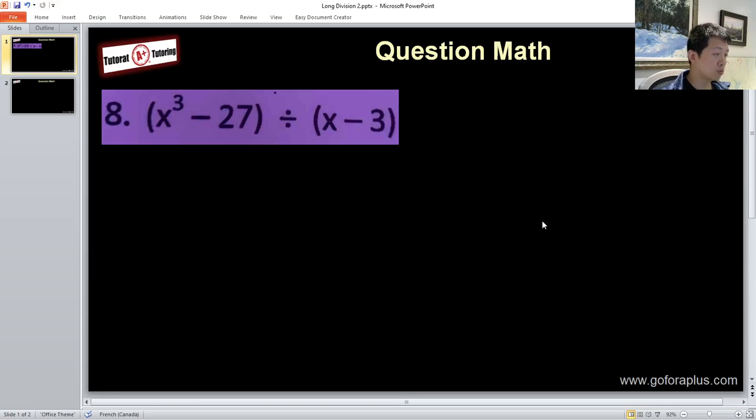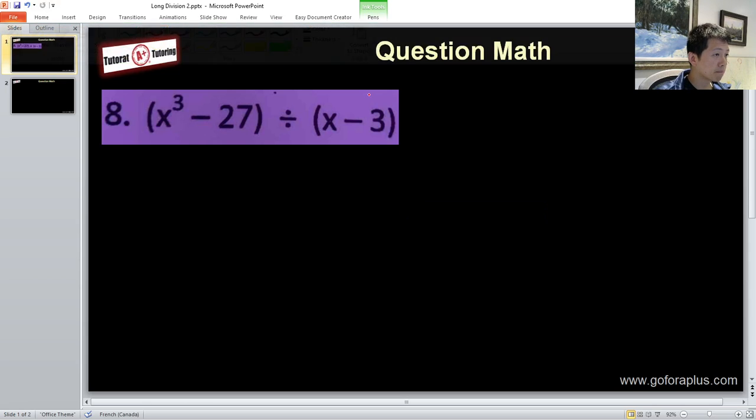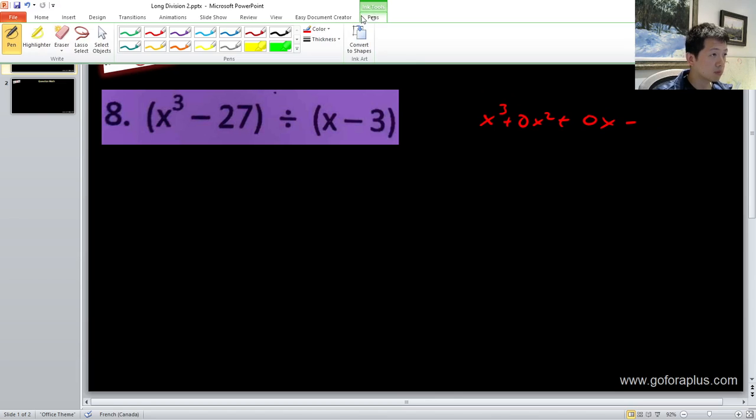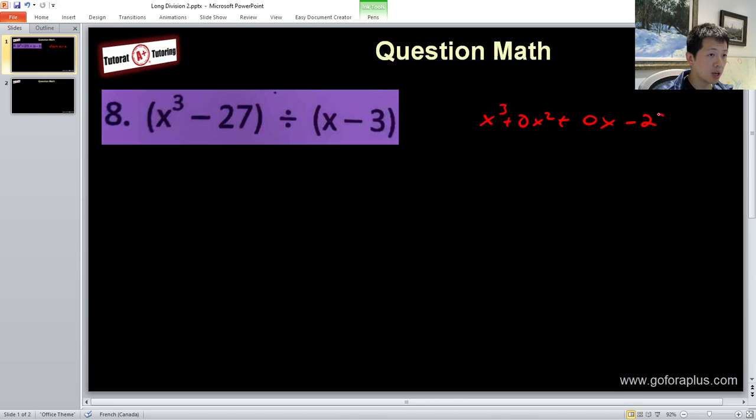Okay, so if we want to do this long division, I'm going to fill up the gap inside. So I'll have x cubed plus 0x squared plus 0x minus 27. So this is what I'm doing.